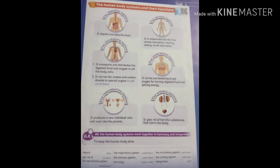The digestive system is responsible for digesting and absorbing food. The circulatory system is responsible for distributing digested food and oxygen all over the body cells. The urinary system is responsible for helping the body get rid of waste.